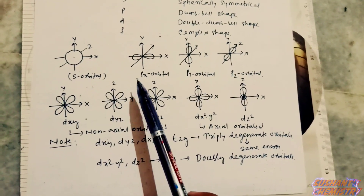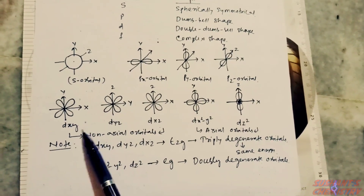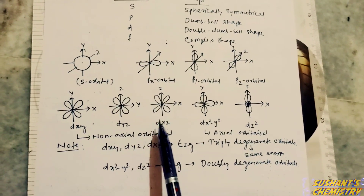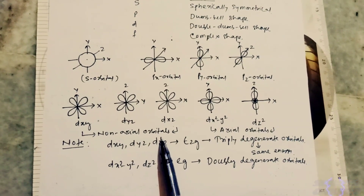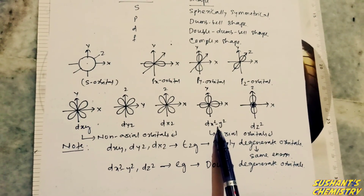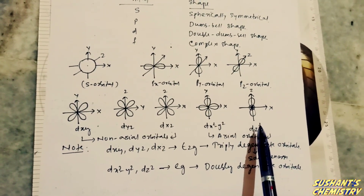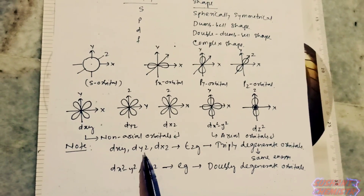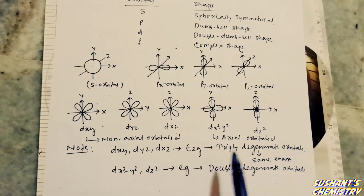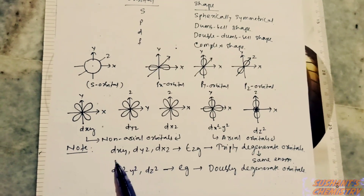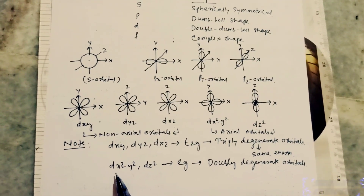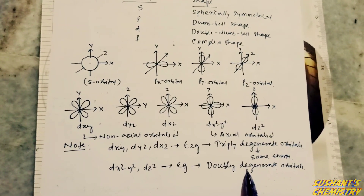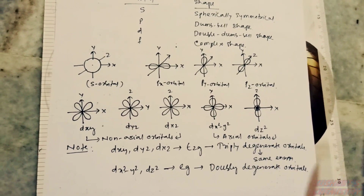To summarize orbital shapes: s has a spherically symmetrical shape; p has a dumbbell shape; d has a double dumbbell shape. The lobes of dxy, dyz, and dzx lie in between the axes — these are called non-axial orbitals. The lobes of dx²−y² and dz² lie along the axes — these are called axial orbitals. The dxy, dyz, dzx set is the t2g set (triply degenerate), and the dx²−y², dz² set is the eg set (doubly degenerate).